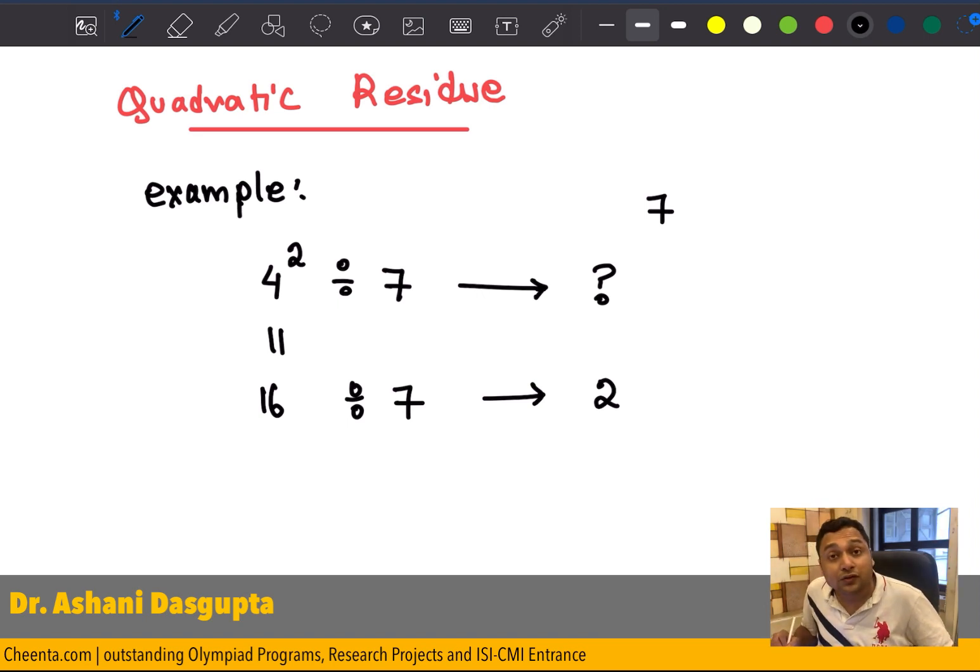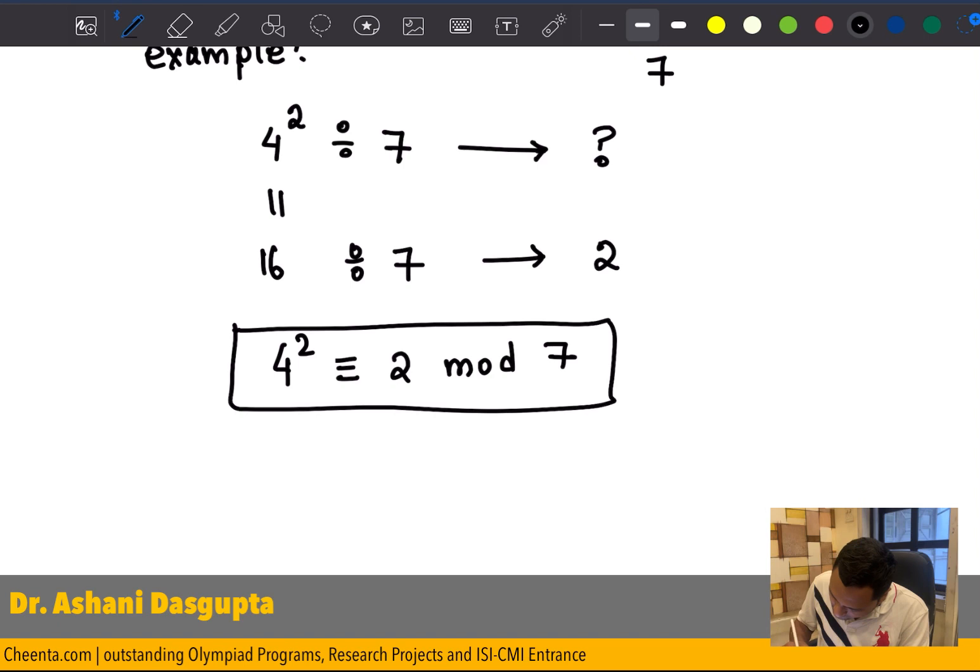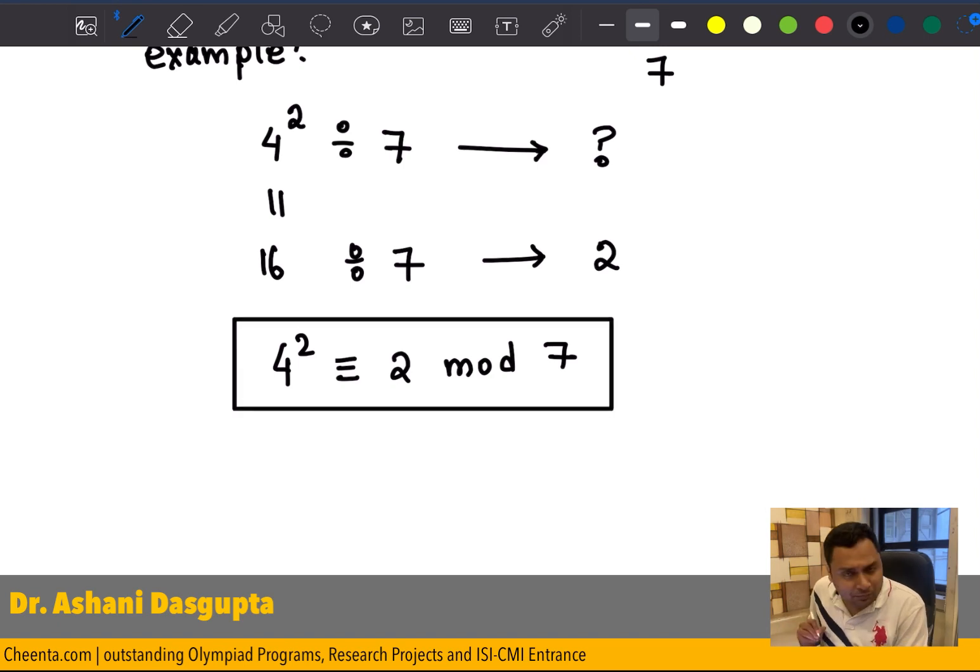Now, those of you who know modular arithmetic, you know that this can be written like this. 4 squared is congruent to 2 mod 7. So, this is very simple. It's a different way of writing what is written here. That is, the difference of 4 squared and 2, the difference between those two numbers is divisible by 7.